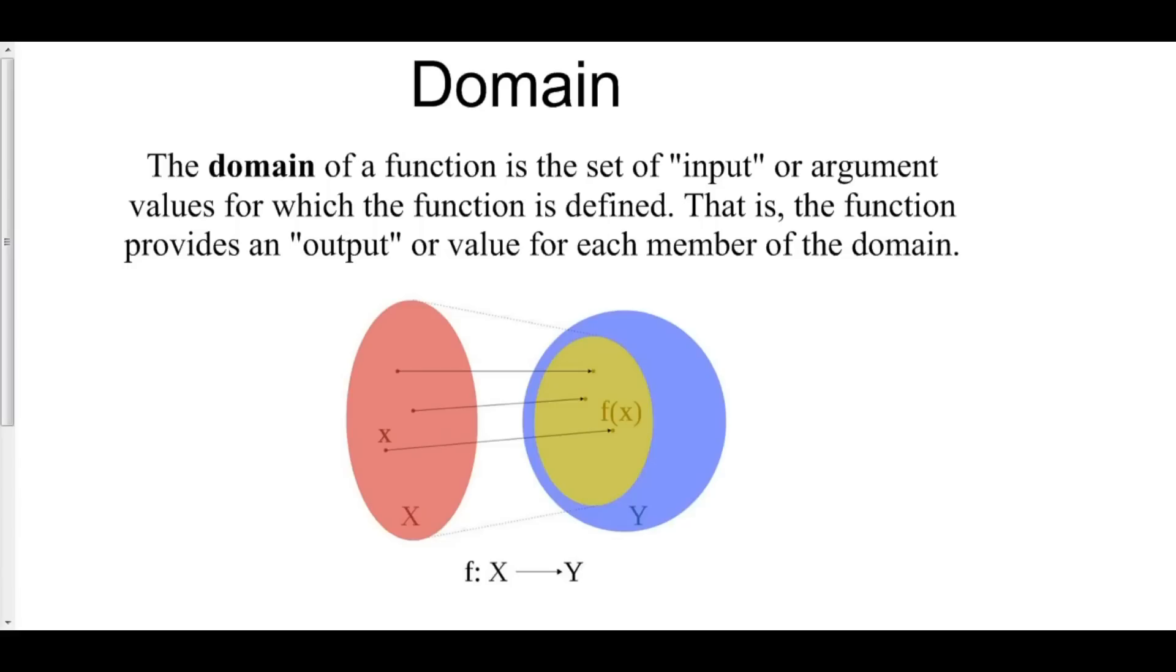Now we call that input domain. The domain of a function is the set of the input or argument values for which our function is defined. That is, the function provides an output for each member of the domain. So consider a function going from x, the domain here, to the image y.